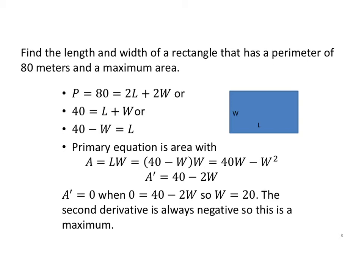Find the length and width of a rectangle that has a perimeter of 80 meters and a maximum area. So our perimeter, which is 80, is always 2l plus 2w. But everything has a multiple of 2, so I'm going to simplify that. 40 equals l plus w, or 40 minus w equals l.